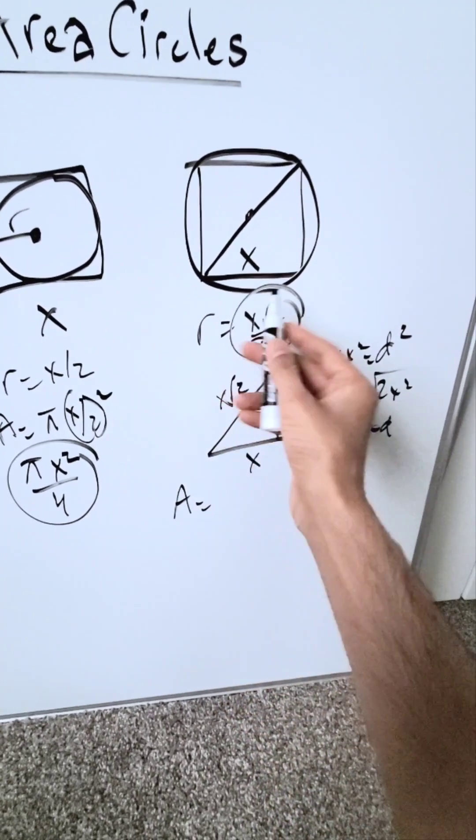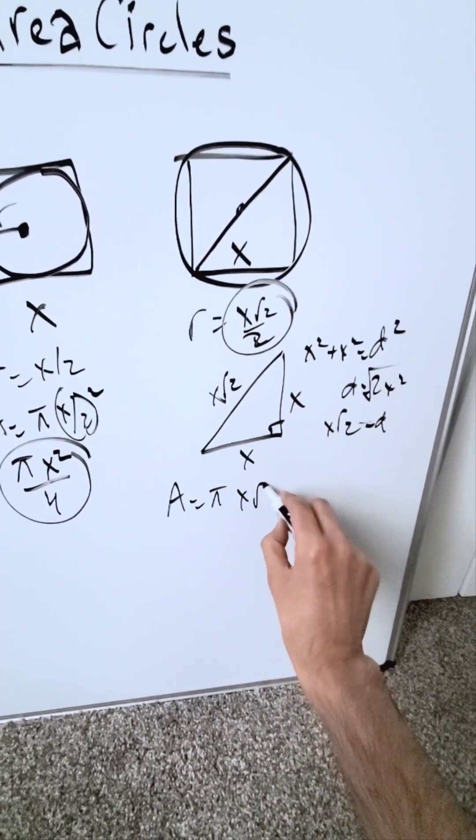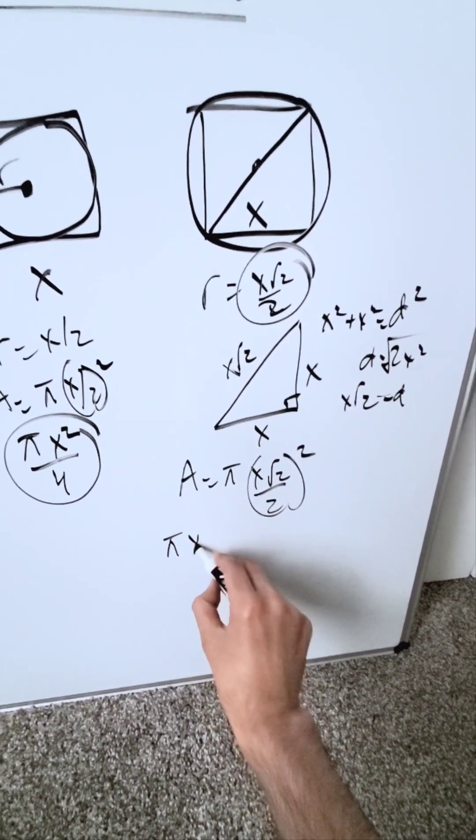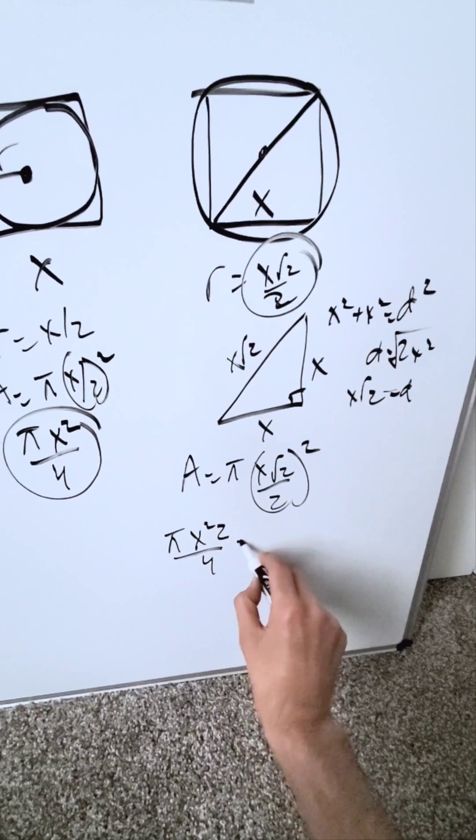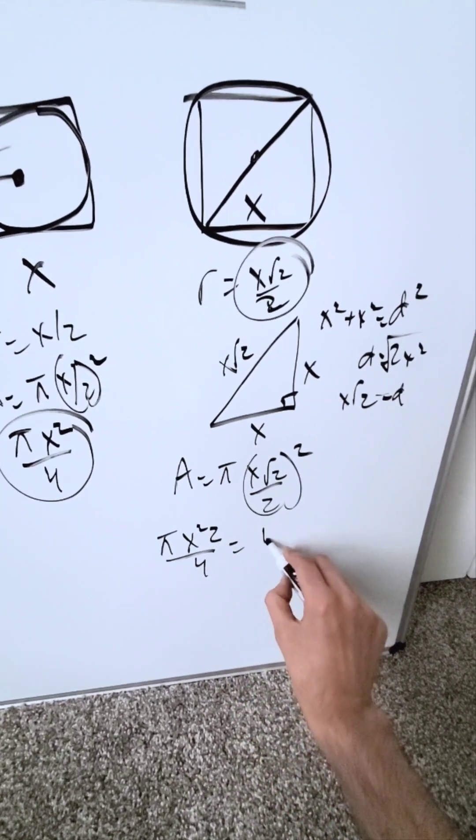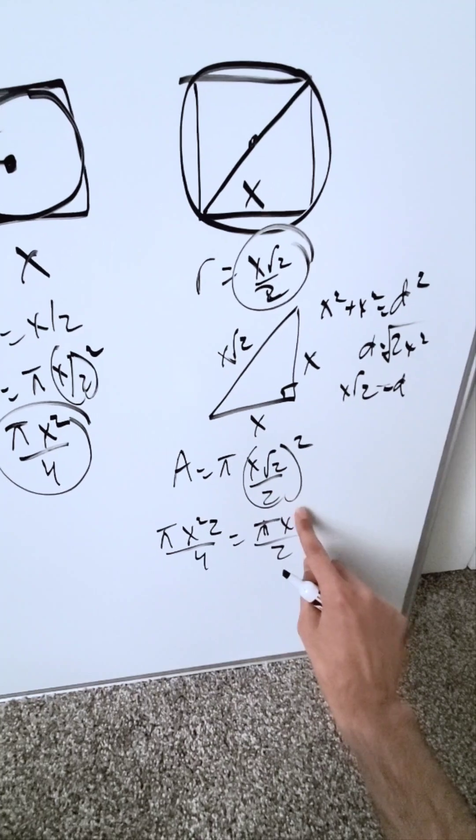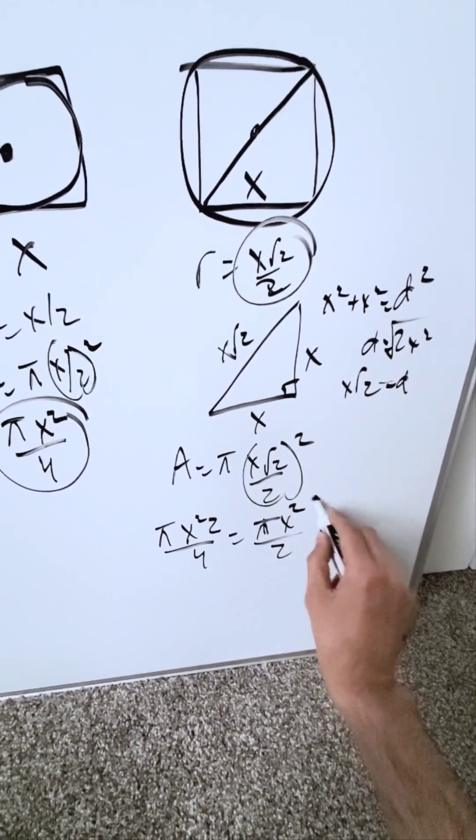Area of this larger circle is π(x√2/2)². Take this forward, you have πx²·2/4. Simplified, you'll have πx²/2, and let's clean this out so it looks like πx²/2.